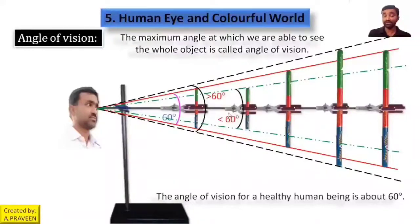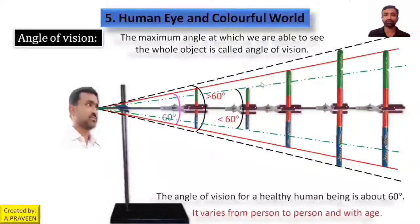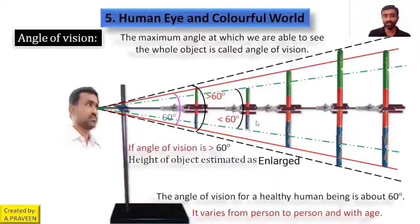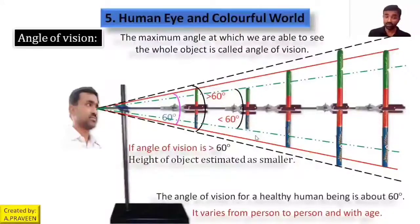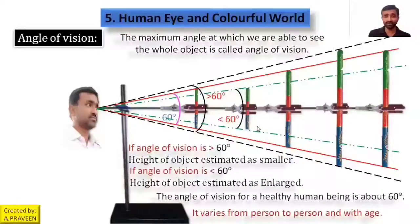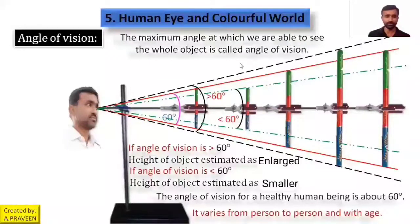This angle of vision is measured in case of a healthy human eye. It varies from person to person and with age also — it is not the same for all. If the angle of vision is above 60 degrees, the height of the object estimated by the eye appears enlarged. If the angle of vision is smaller than 60 degrees, the height of the object is estimated as smaller. The height of an object estimated by our eye depends on the angle of vision. If you like this video, please share it and comment. Thank you.